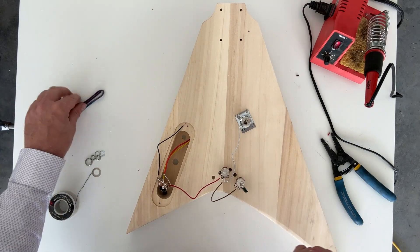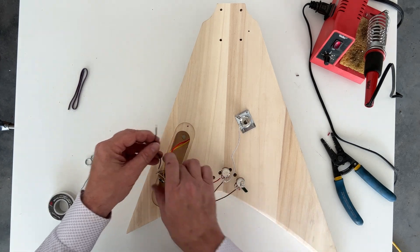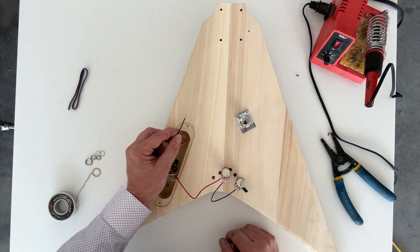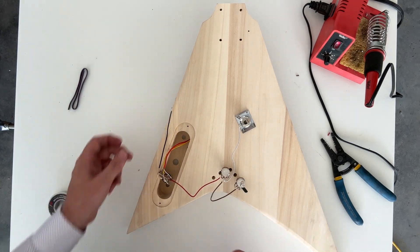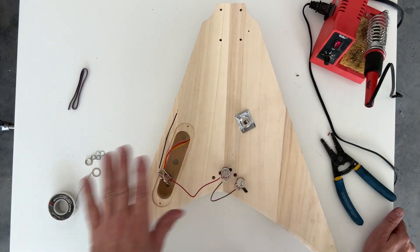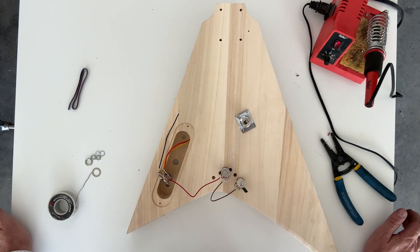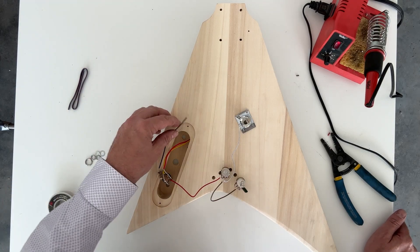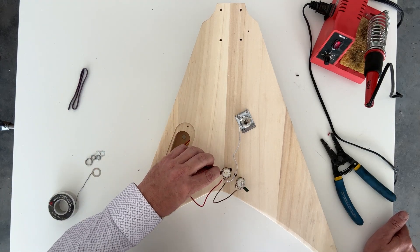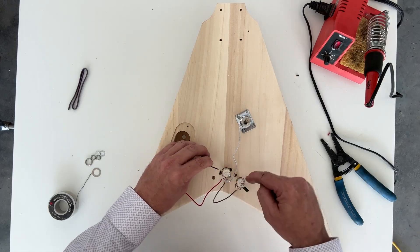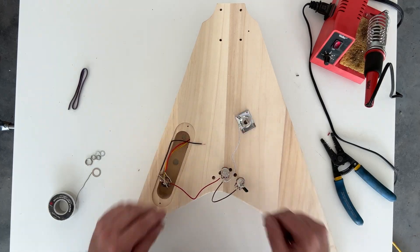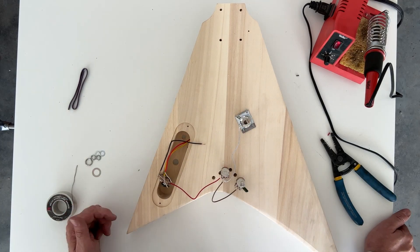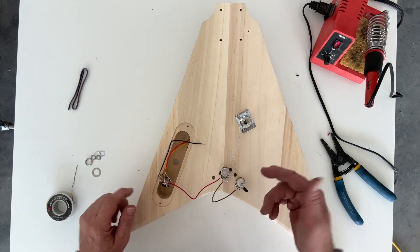Now we just need to finish up with all of our ground wires. We'll start with this ground that comes from the switch. One way to think about this: every ground in the guitar should be connected to every other ground in the guitar one way or another. What I like to do is ground the switch to one of the pots, go from one pot to the other pot, and we'll send a wire out to the ground.